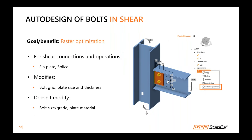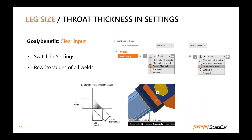A similar feature exists for bolts: auto design of bolts, limited to shear connections and operations thin plate and splice. With one click it changes and modifies the bolt grid position, plate size, and thickness. What it doesn't change — because you want to keep these — is the bolt size and grade, and the plate material. You can test and play with it to be faster, more productive, and safe.